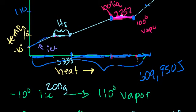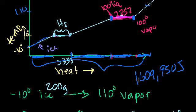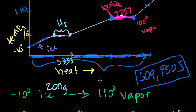609 kilojoules is an interesting result. 200 grams of ice is about half a pound. So to take half a pound of ice and heat it all the way to 110-degree steam on your stove would take about 609 kilojoules of heat — something you could actually do at home.